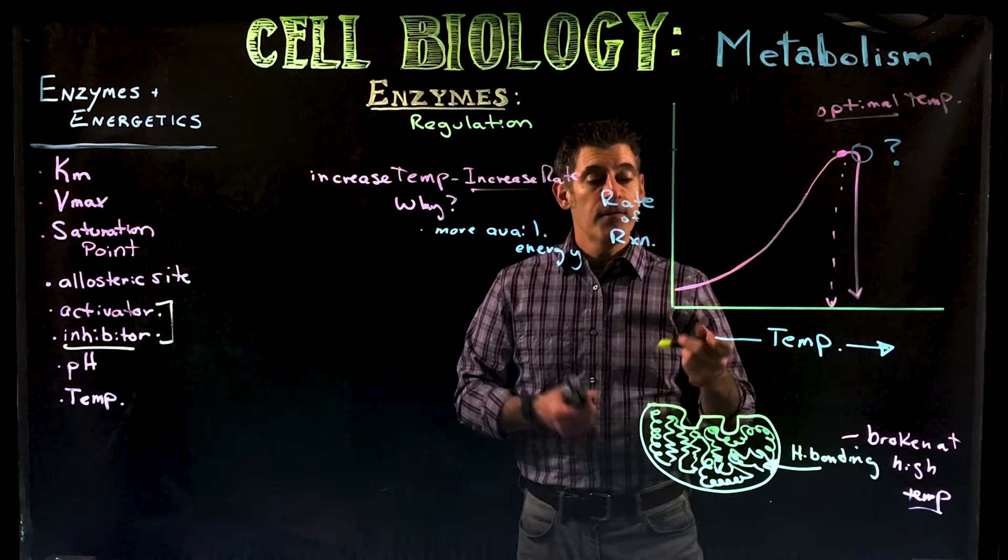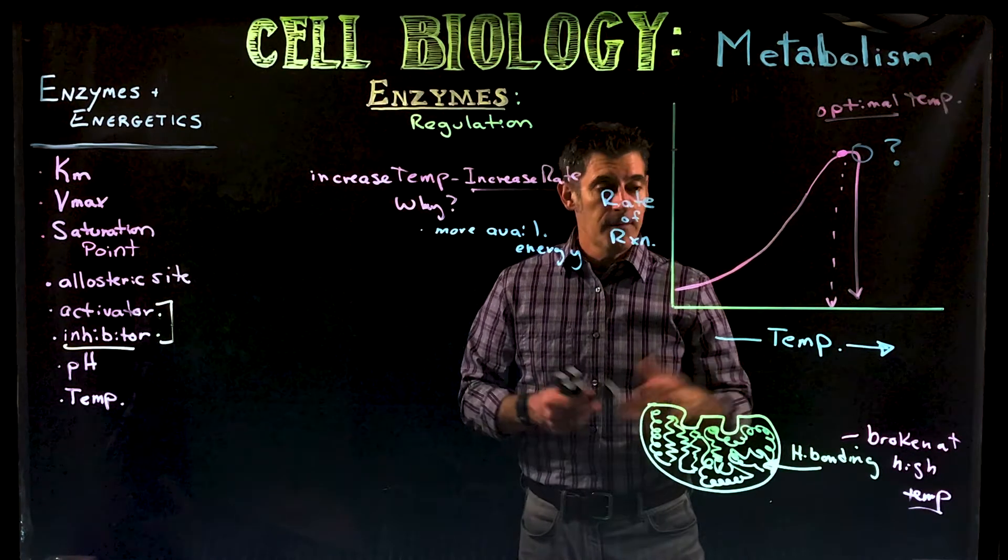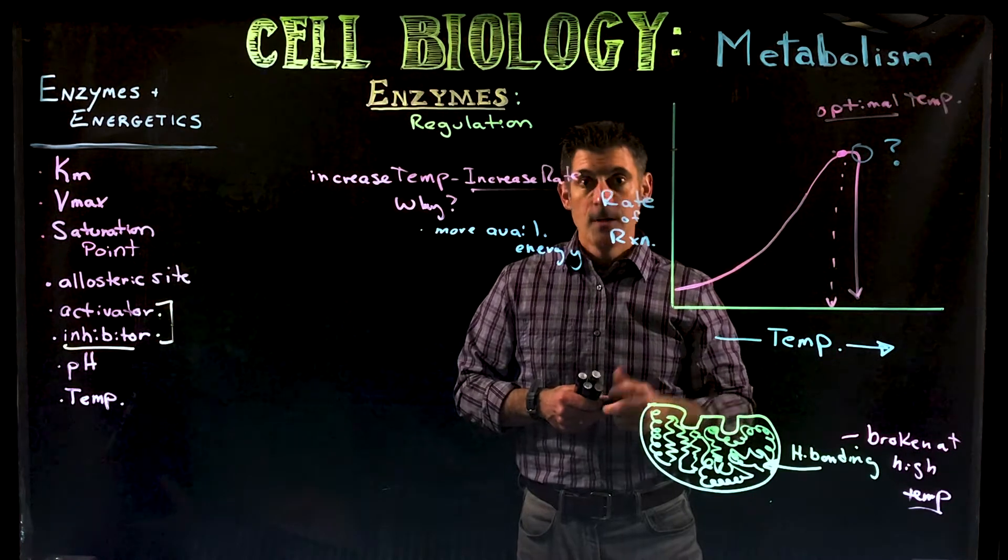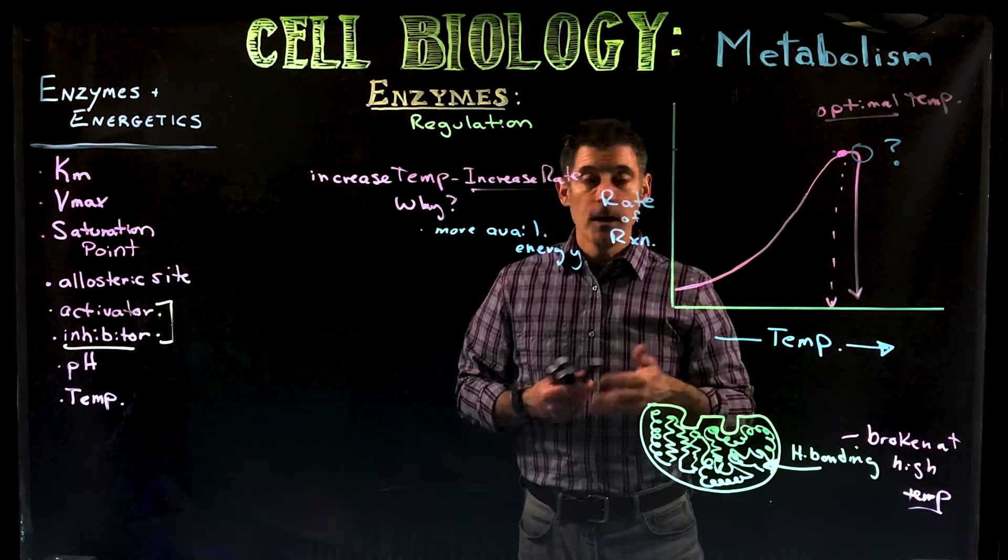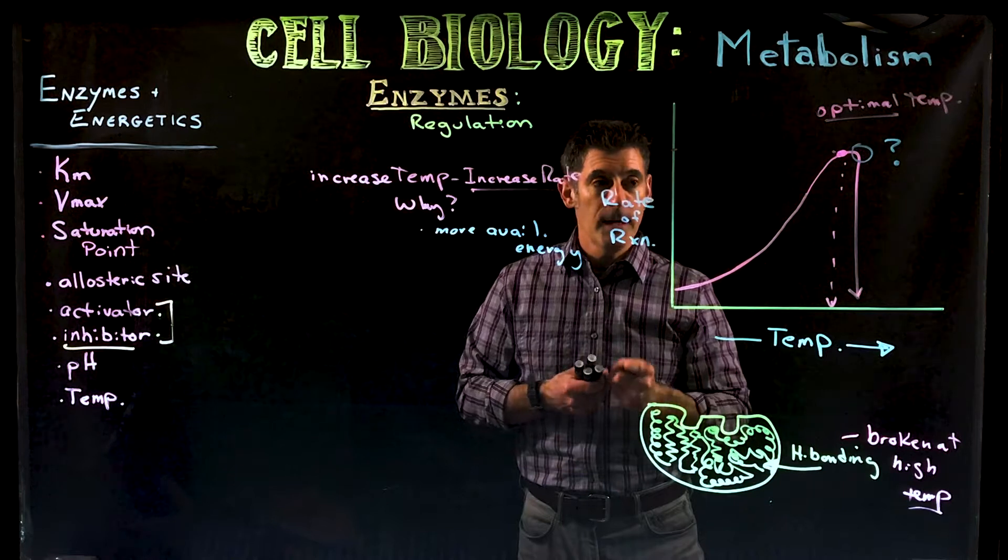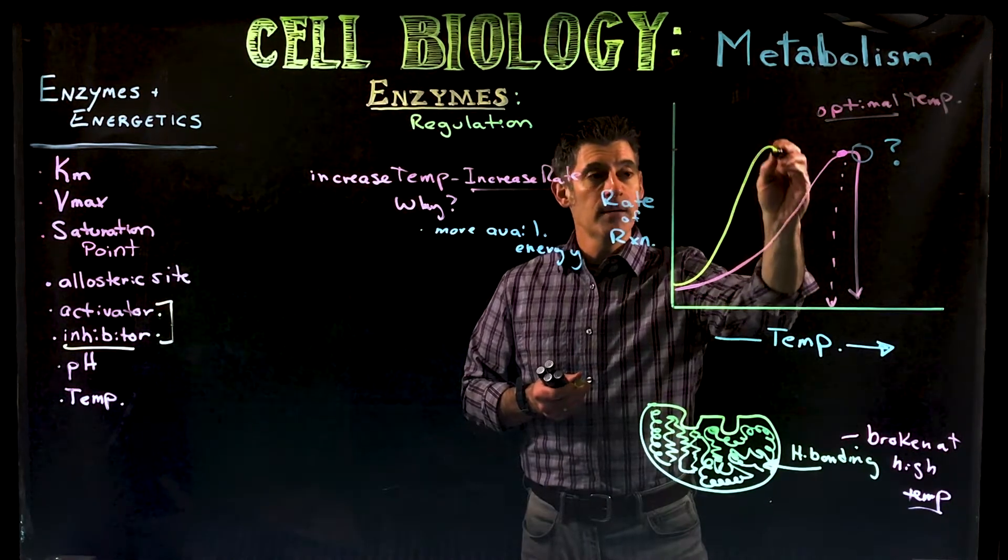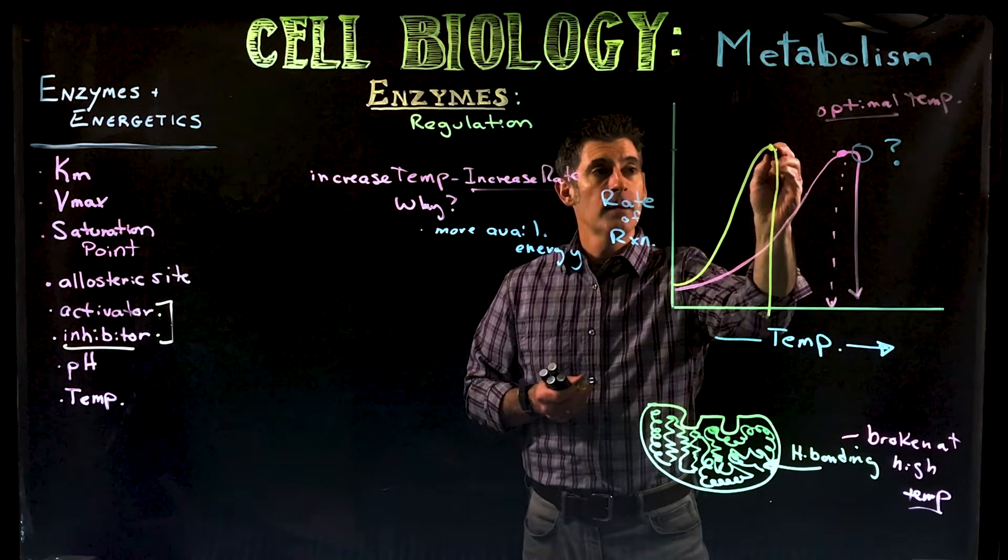The thing is for different organisms and different enzymes, there can be different optimal temperatures. So if you're an organism living in a very cold climate and you're always in a cold climate all the time, your optimal temperature may be right here, really low and maybe have a really low optimal temperature.